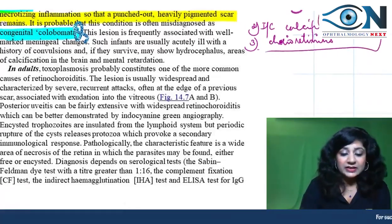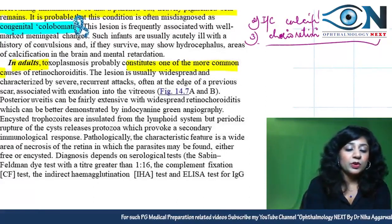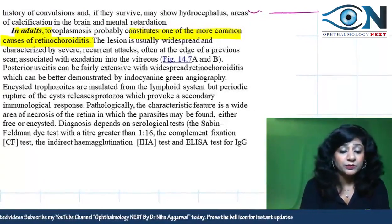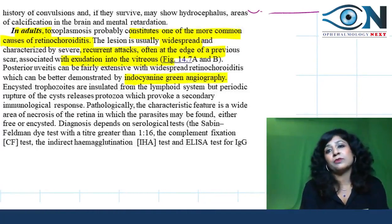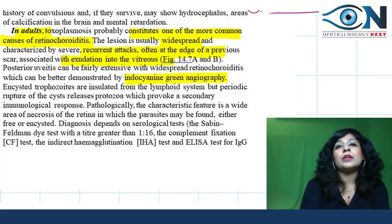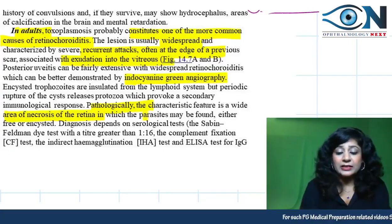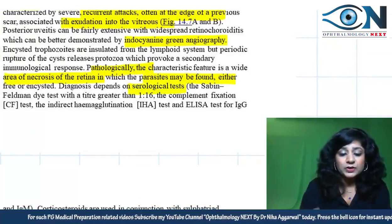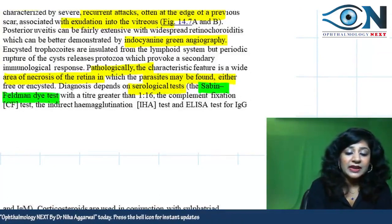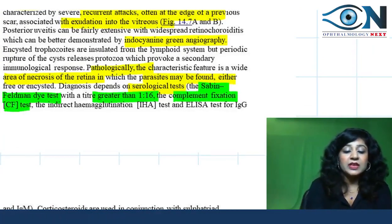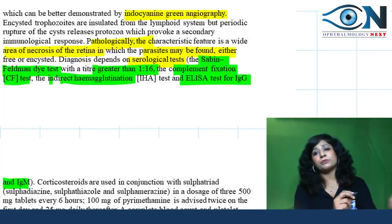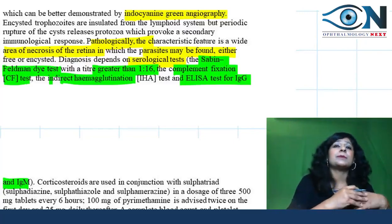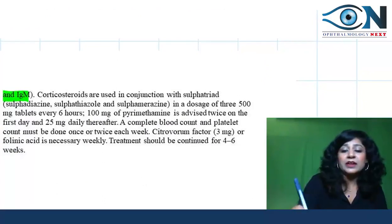In adults, toxoplasmosis is one of the more common causes of retinochoroiditis, with widespread infection, recurrent attacks, and significant vitreous exudation. Indocyanine green angiography is useful for detecting choroidal lesions. Pathologically, areas of necrosis contain the parasites. Diagnosis depends on serology — the Sabin-Feldman dye test with titer greater than 1:16, complement fixation test, indirect hemagglutination test, and ELISA for IgG and IgM.